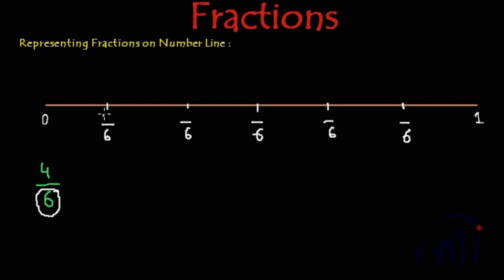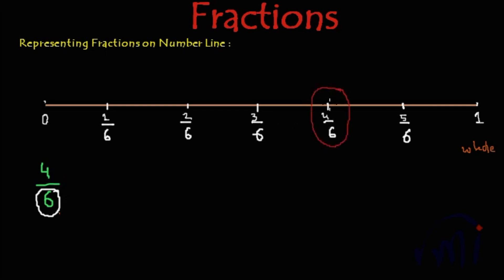Over the bars we will get 1 here, this will be 2, this will be 3, this will be 4, and this will be 5. And this is actually 6 by 6 — 6 out of 6 is a whole. So this point is 0 and this point will be whole. We were supposed to represent 4 by 6, so this point represents 4 by 6.